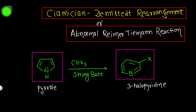In this session we will continue our organic name reaction series. Today we will discuss a new name reaction called the Ciamician-Dennstedt rearrangement, also known as the abnormal Reimer-Tiemann reaction.